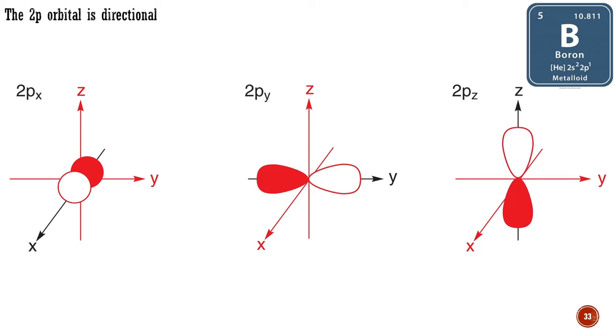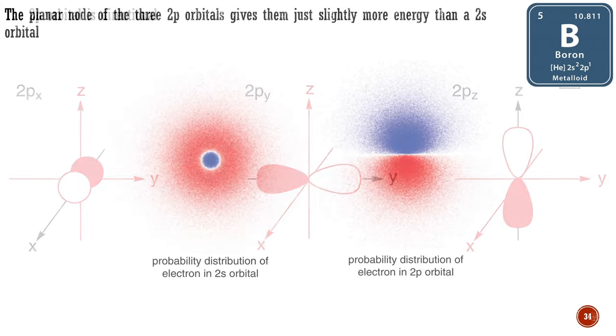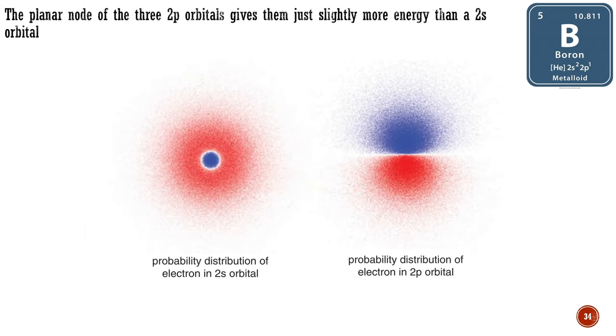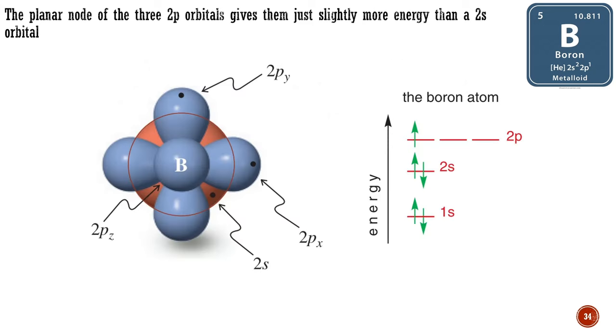We can call these 2px, 2py and 2pz if we need to. The planar node of the three 2p orbitals gives them just slightly more energy than a 2s orbital, which has a spherical node. Therefore, boron atoms have two electrons in the 1s orbital, two in the 2s orbital, and just one in one of the 2p orbitals. The orbital occupancy is shown in the energy level diagram on the right. You can imagine the shape of each of the orbitals.